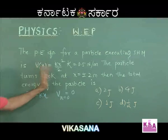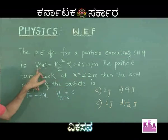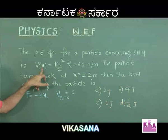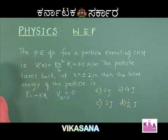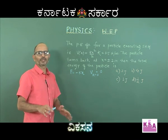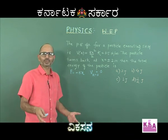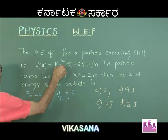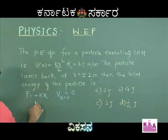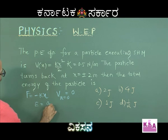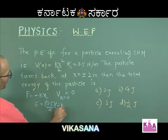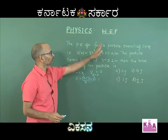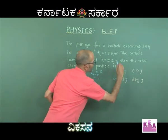Now, at the extreme position the velocity becomes 0 and there is no kinetic energy. So all the energy at the extreme position is entirely potential, and since mean position energy is 0, I put x = 2 to get total energy E = (0.5/2) × 2² = 1 joule. So 1 joule is the total energy of this particle, making option C perfectly correct.